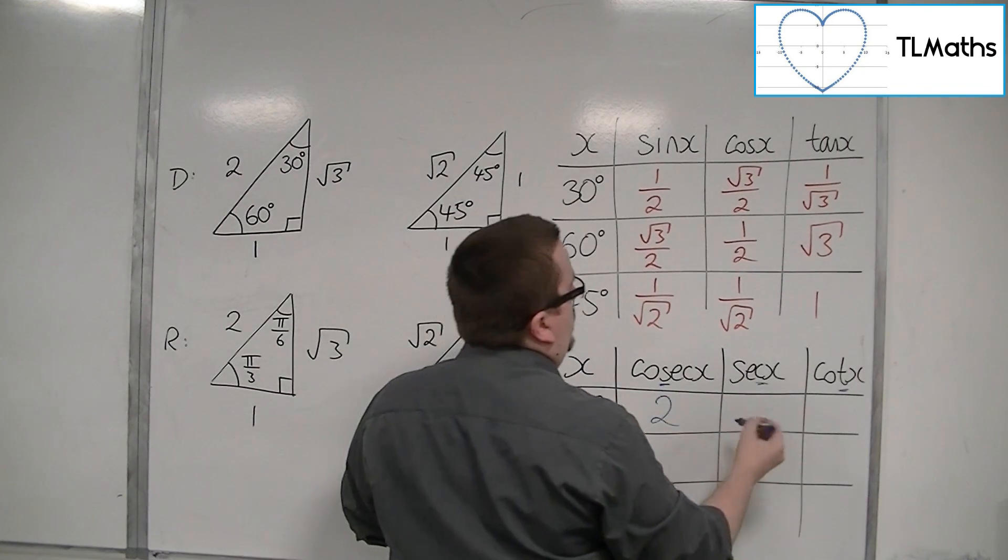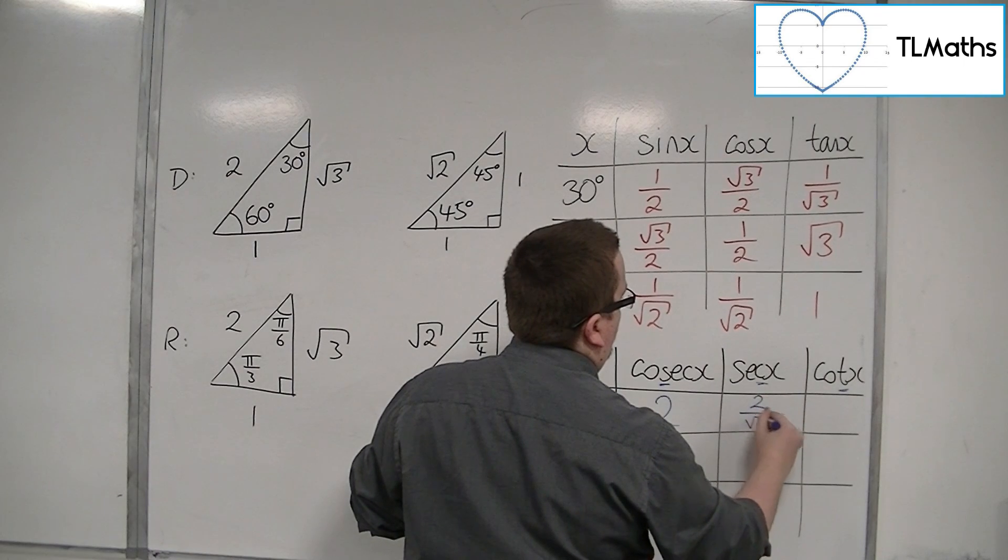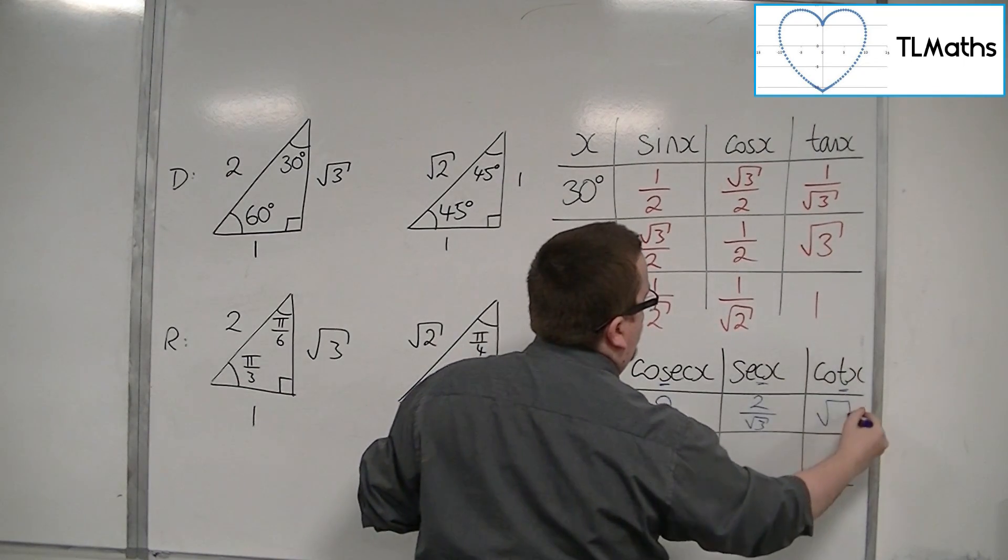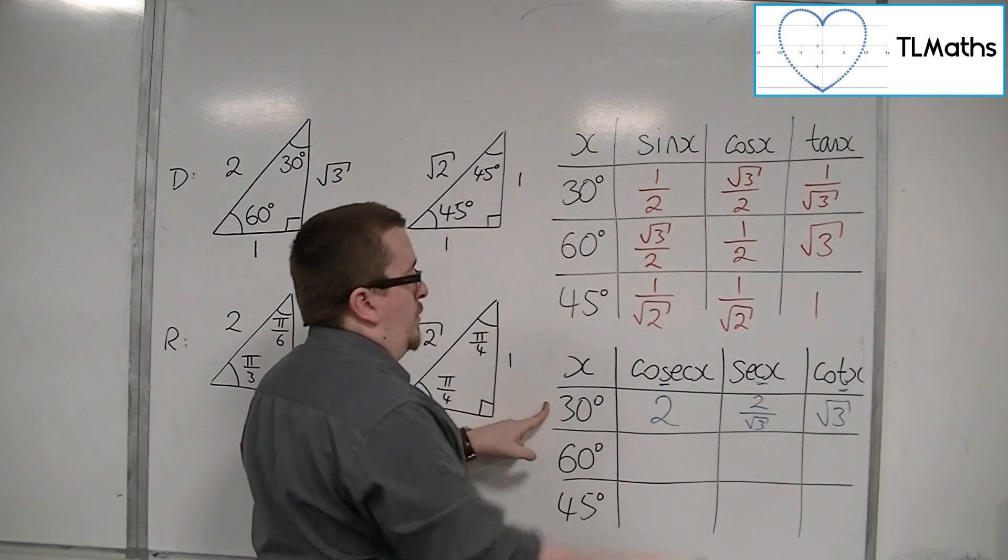Sec of 30 would be 2 over root 3. Cot will be root 3 over 1, so just root 3, so cot of 30 rather.